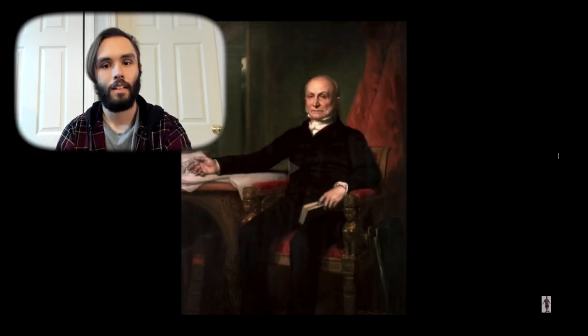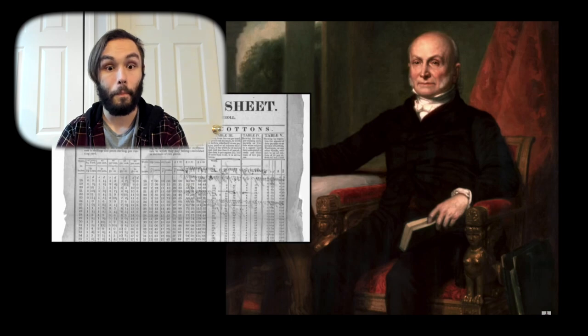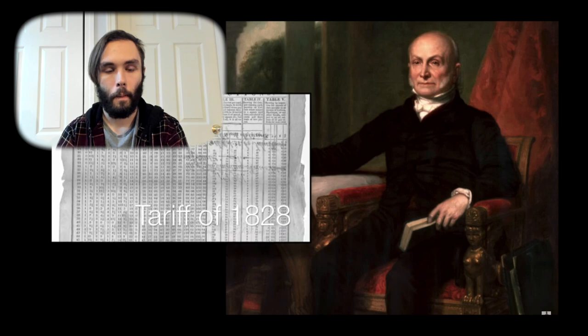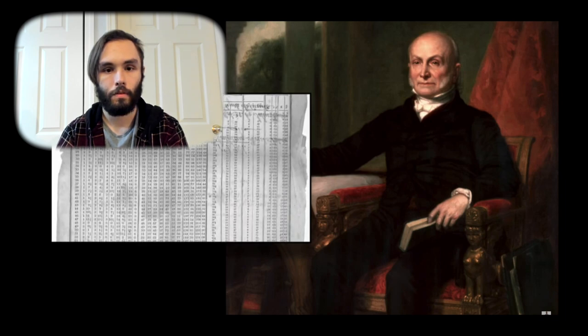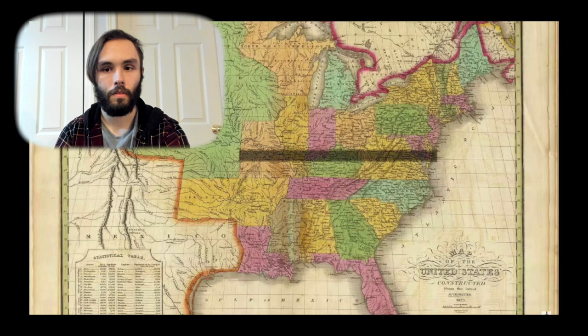Meanwhile, the Jacksonians criticized John Quincy Adams for seemingly everything. Their criticism peaked after Adams signed into law the tariff of 1828, which increased tariff rates above 60%. Critics called it the tariff of abominations, as it ended up hurting the economy of several southern states. Tariffs are difficult — you're never going to get people happy with tariffs.